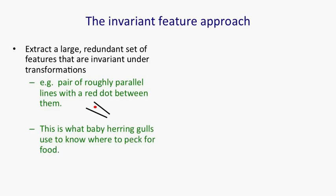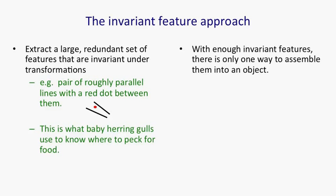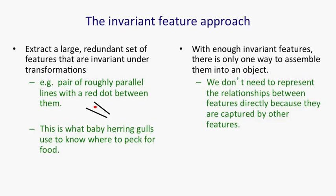If you paint that feature on a piece of wood, they'll peck at the appropriate place on the piece of wood. And with enough invariant features, there's only one way to assemble them into an object or an image. You don't actually need to represent the relationships between features directly, because those relationships are captured by other features.